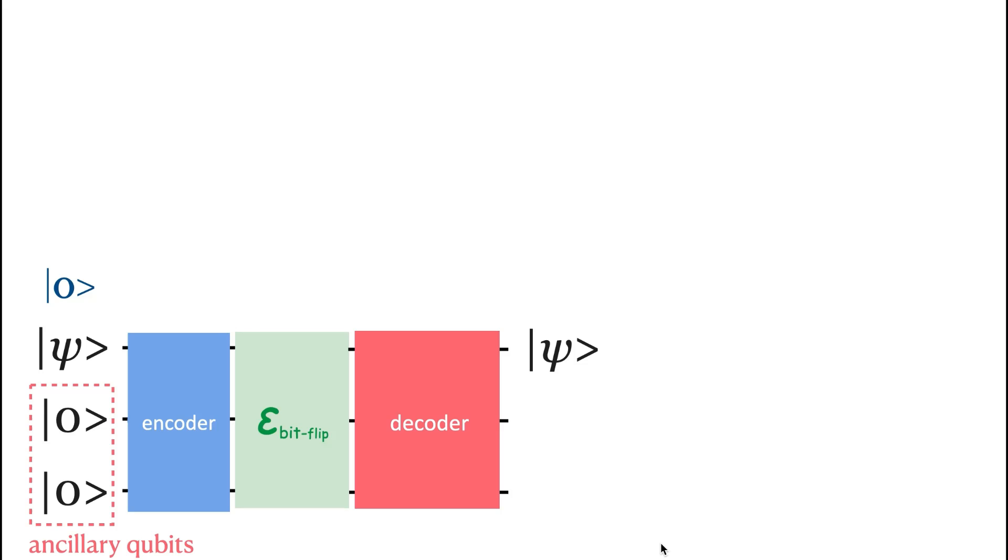So when we send the information from the input, the qubit carrying the information will be encoded into a greater number of qubits. In this case, the qubit with the information state 0 will be encoded with two ancillary qubits. After the encoding process, the input becomes state 0, 0, 0.